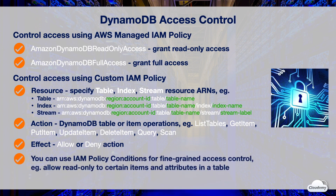You can use IAM policy conditions for fine-grained access control. For example, you can restrict access to specific items in a table based on the primary keys. Suppose you have a user table that stores users' specific information — you can use a conditional policy to allow users to access items with primary keys that match their user IDs.